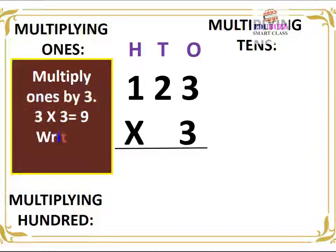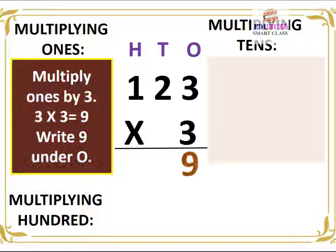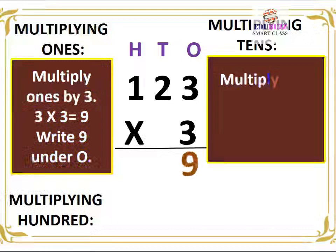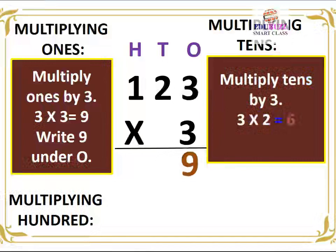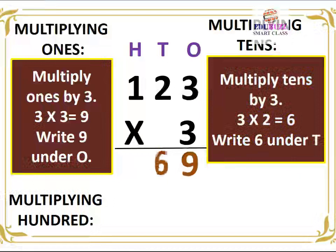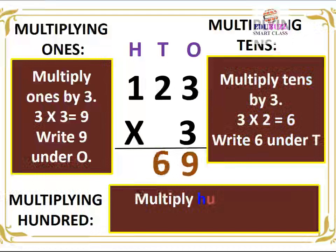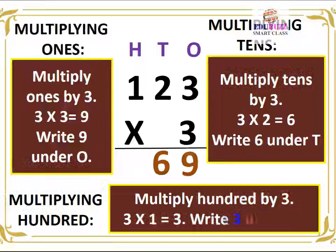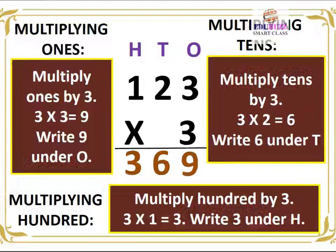123 × 3. Multiplying ones: 3 × 3 is equal to 9, write 9 under O. Multiplying tens: 3 × 2 is equal to 6, write 6 under T. Multiplying hundreds: 3 × 1 is equal to 3, write 3 under H. 123 × 3 is equal to 369.